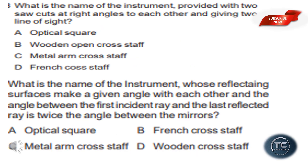What is the name of the instrument provided with two sockets at right angles to each other, giving two lines of sight? The options are optical square, wooden open cross staff, metal arm cross staff, and French cross staff. There are two sockets at right angles to each other. The answer is option B: wooden open cross staff.